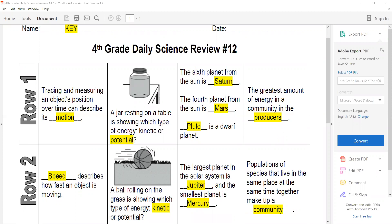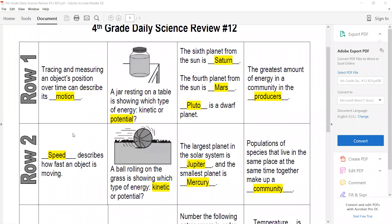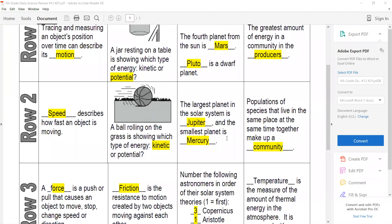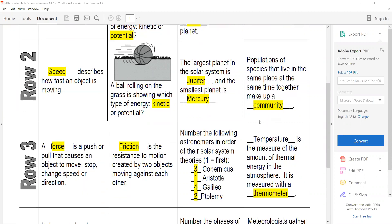Speed describes how fast an object is moving. This rolling ball is showing kinetic energy. Our largest planet is Jupiter and our smallest is Mercury. And a population of species that live in the same place at the same time are a community.